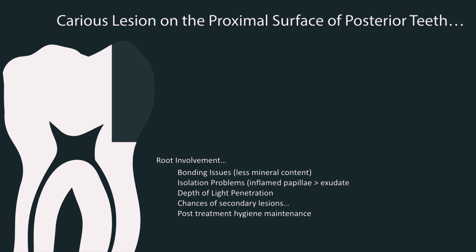Another variable is the depth of light penetration in these regions. If the depth is greater, there will be lesser chances of proper light penetration and hence less degree of conversion, which could cause problems with bonding or result in uncured composite. There are also chances of secondary lesions as well as post-treatment hygiene problems due to possible overhanging in this region.